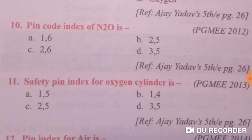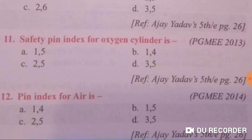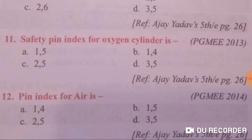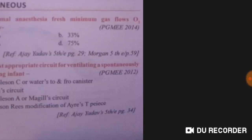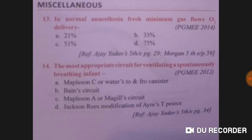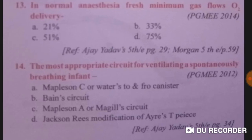The pin index code of nitrous oxide is 3 to 5. The safety pin index of the oxygen cylinder is 2 to 5. The pin index for air is 1 to 5. You have to learn these values.